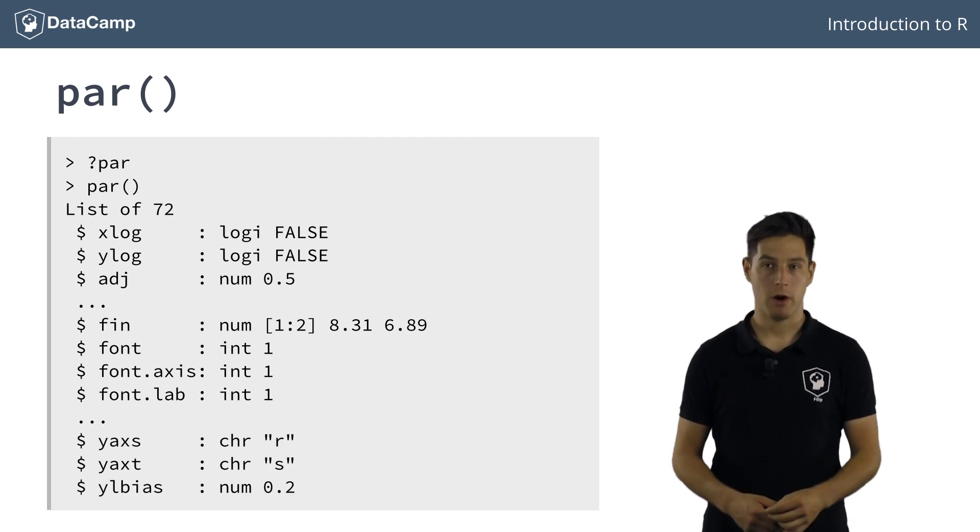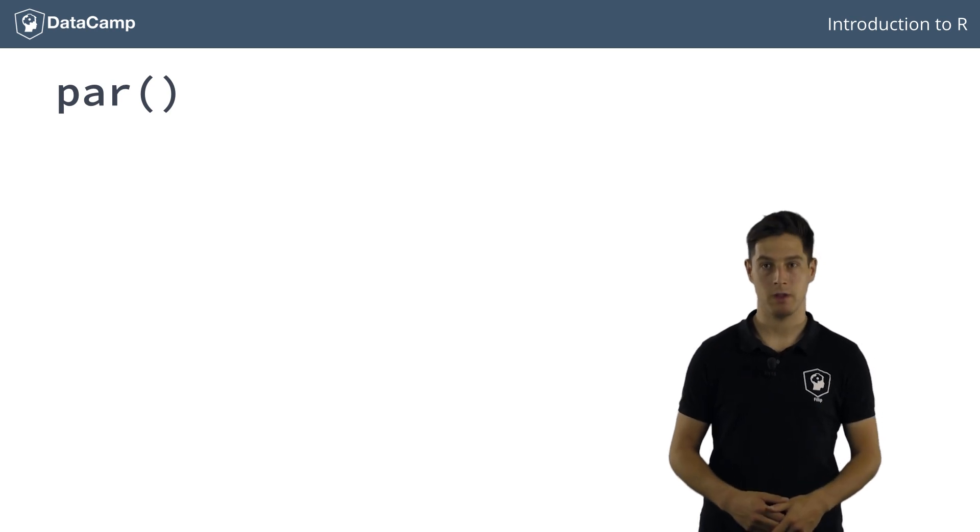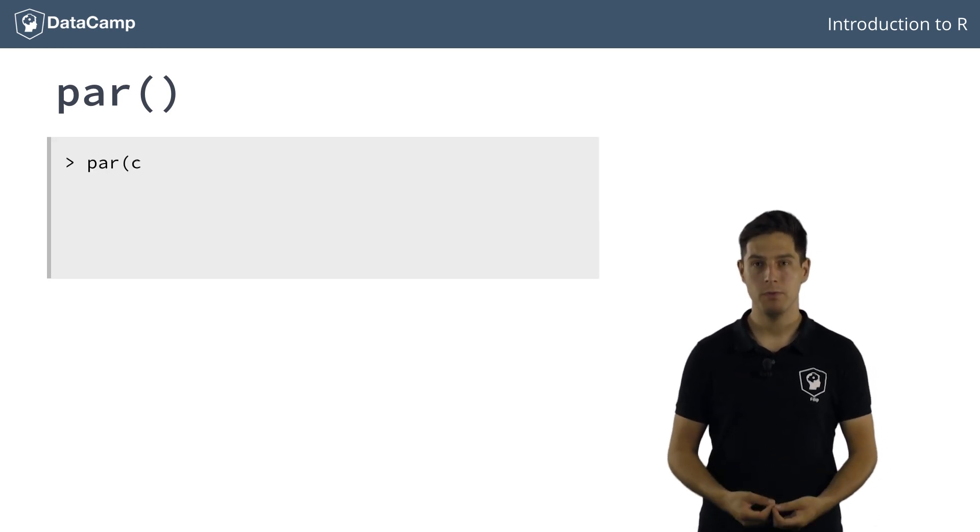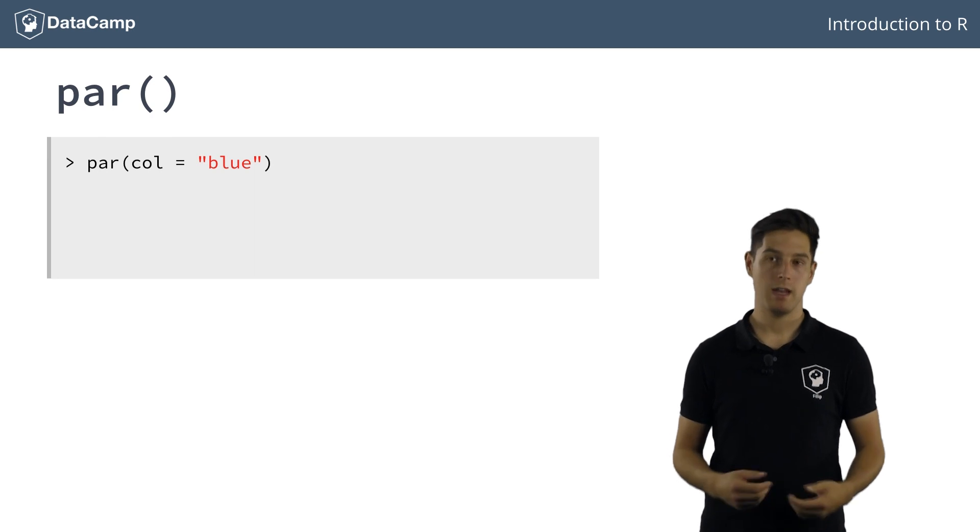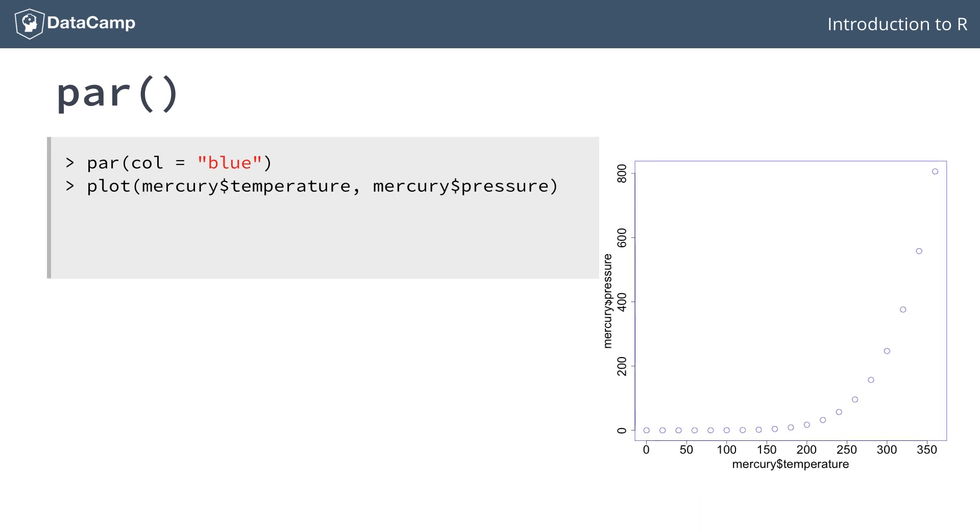You can also use par with arguments to specify session-wide graphical parameters. Suppose you set the color to blue using the par function, and now create a plot. Of course, it's blue. If you next create another plot, the plot is still blue. That's because parameters specified with par are maintained for different plotting operations.